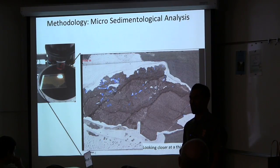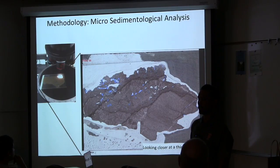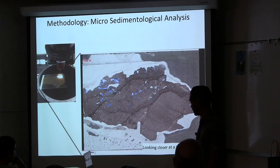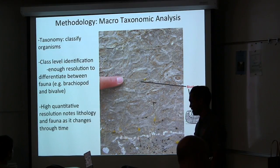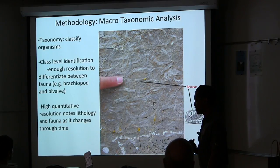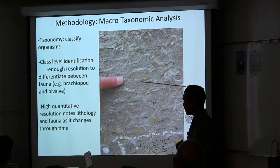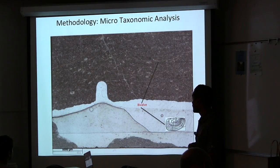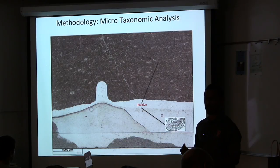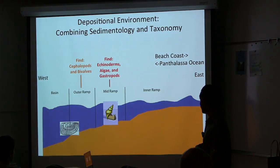Thin sections have a 94% confidence using the 200-point count per thin section standard. For example, a thin section with 30 micrite points can range from 24 to 36 micrite points — micrite referring to fine sediment. The macro-taxonomic analysis helps identify organisms at a class level. This scale of fauna identification allows differentiation between brachiopods and bivalves. The micro-taxonomic analysis looks at fossils under the microscope that can't be seen in hand sample. Combining the sedimentological and taxonomic analyses helps determine depositional environment.